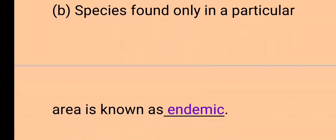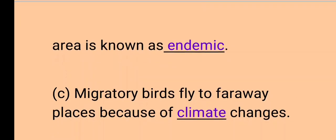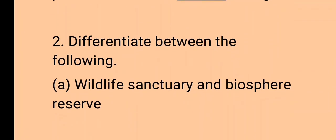Second: a species found only in a particular area is known as an endemic species. Next, migratory birds fly to far away places because of climatic change. Due to climate change, the birds fly from one place to another.